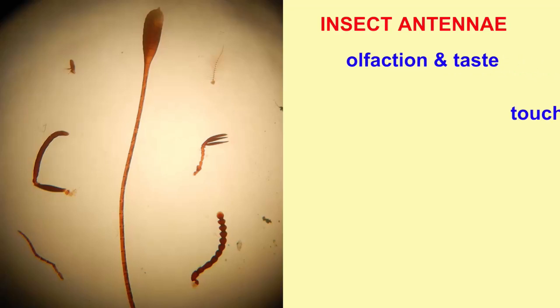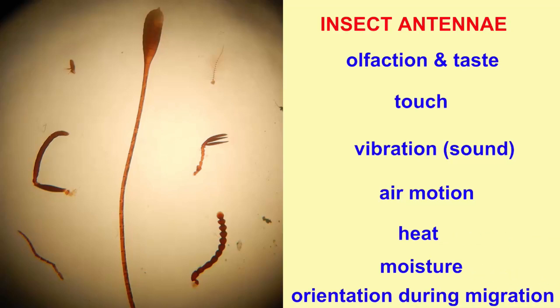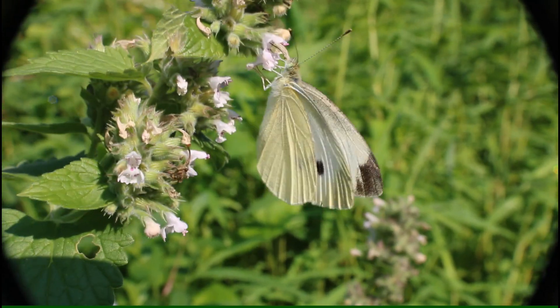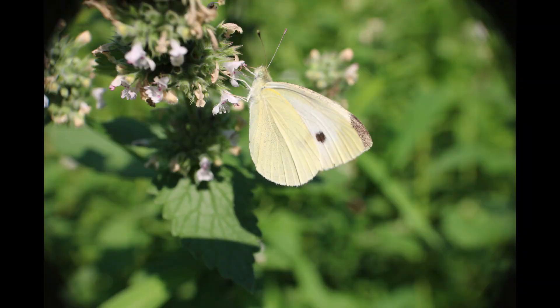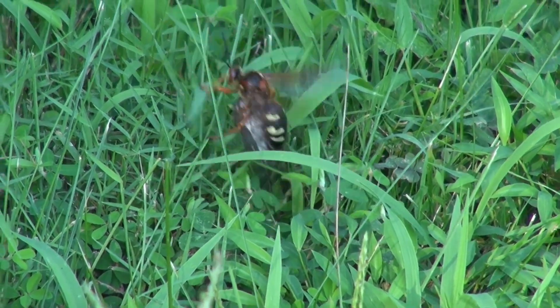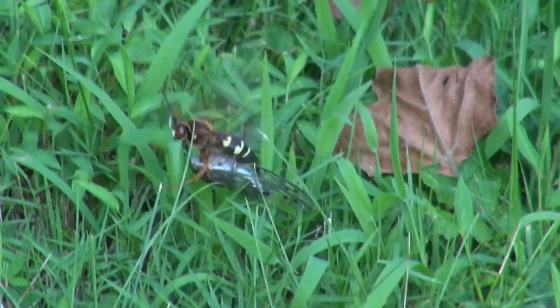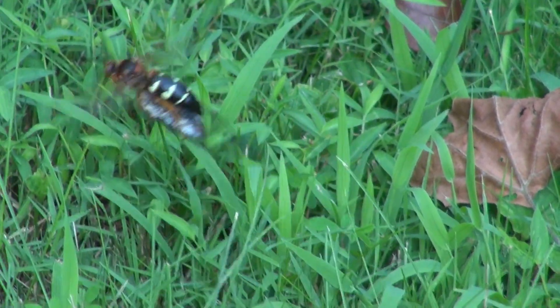Insect antennae can perform diverse functions, such as olfaction and taste — by olfaction this could be of foodstuffs or even of pheromones used in mating. Antennae can also be used in touch, in perceiving vibrations or sound, and in detecting the motions of air, and thus be important in flight.